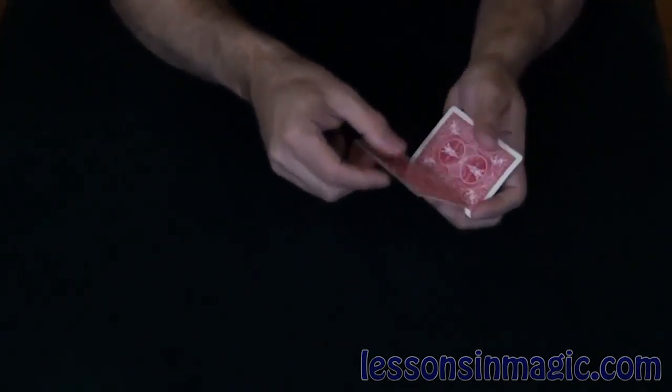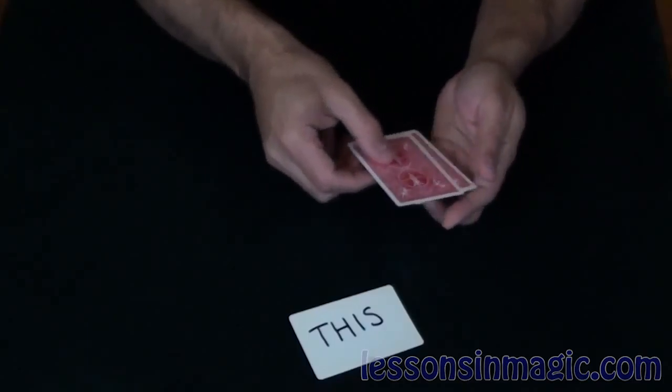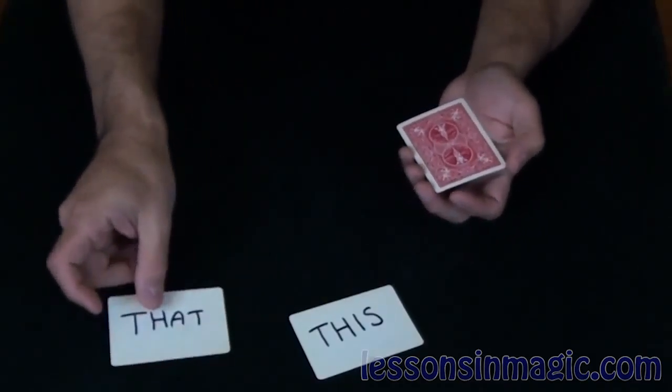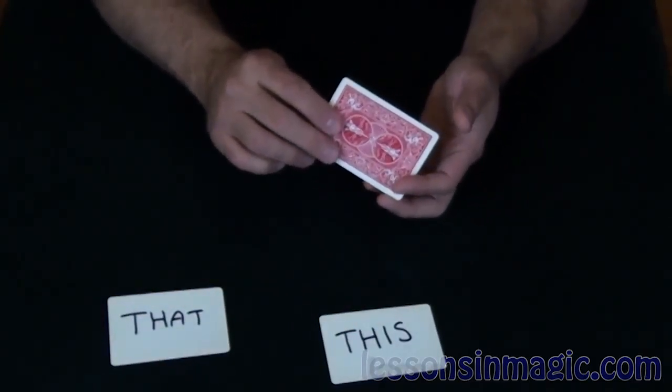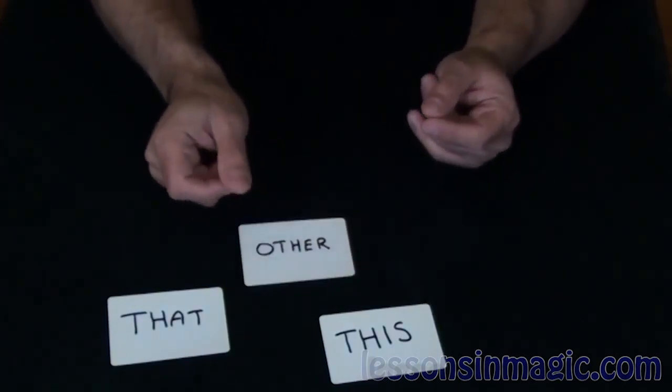Perhaps I should eliminate two of the cards. I'll eliminate this, and I'll eliminate that, which leaves me with one card. What do you think it is? You'd be wrong, because it's the other. And that is called this and that.